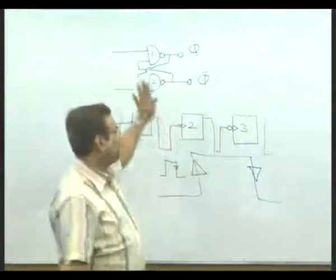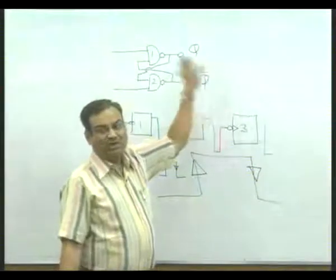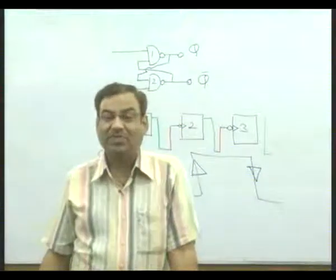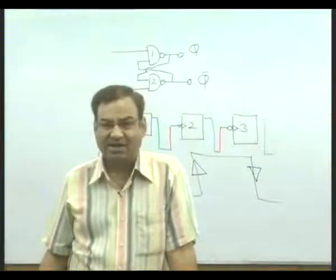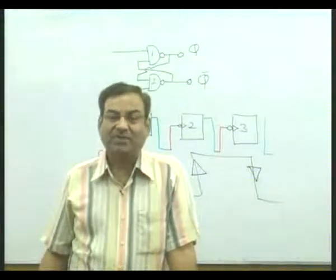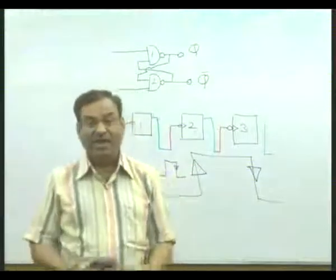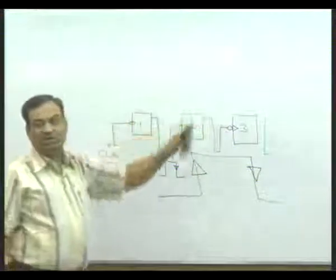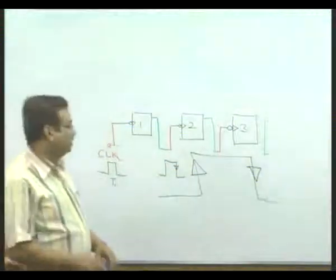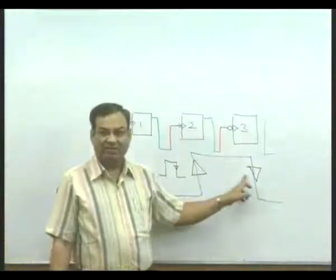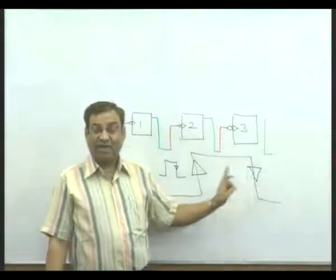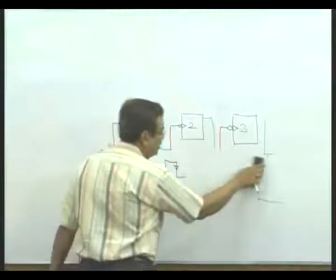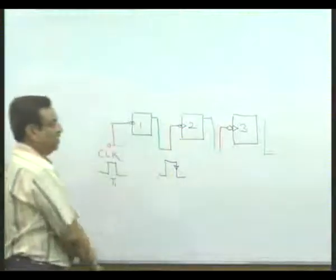In master-slave flip-flops, you put one more circuit in addition. Two circuits are independent except for a common clock connection. Such master-slave flip-flops will not have this race around condition. Race around condition is well avoided in negative-triggered flip-flops, and therefore negative-triggered flip-flops are most common. Here we have a flip-flop which is a negative-triggered flip-flop.